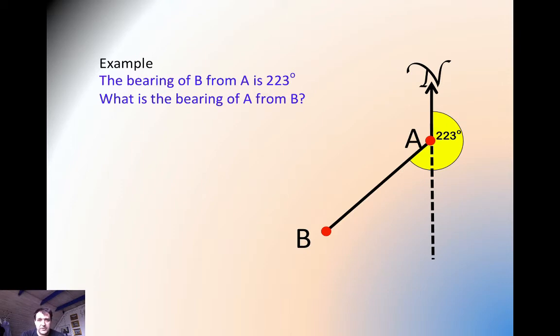Let's have a look at an example. We've got 223 degrees, and we want to know the reverse bearing. The bearing of B from A is 223. What is the bearing of A from B?